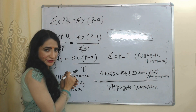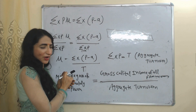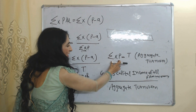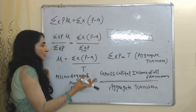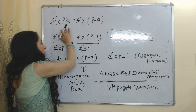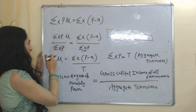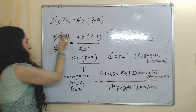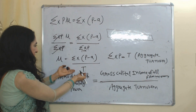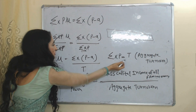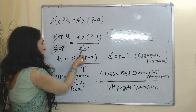Price times quantity equals total revenue. When we apply the sigma summation, it becomes equal to T, where T means aggregate turnover. We then divide both sides of this equation by aggregate turnover. This and this cancel with each other, giving us our final equation. Since T is equal to sigma XP, we replace T in place of sigma XP.